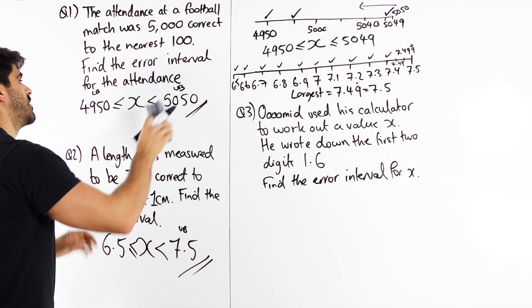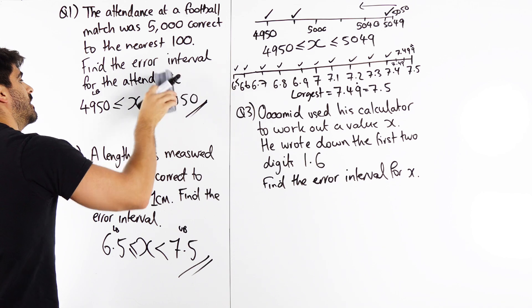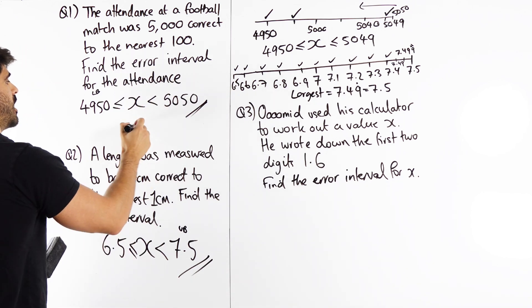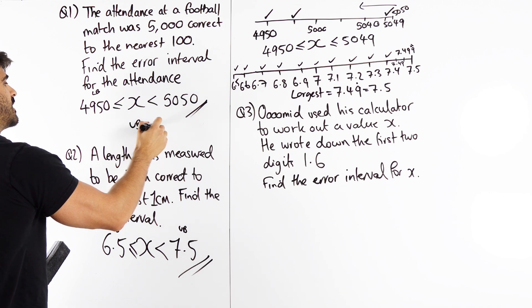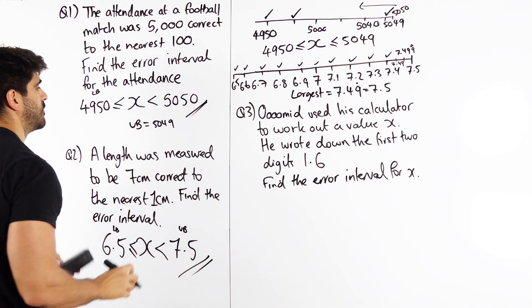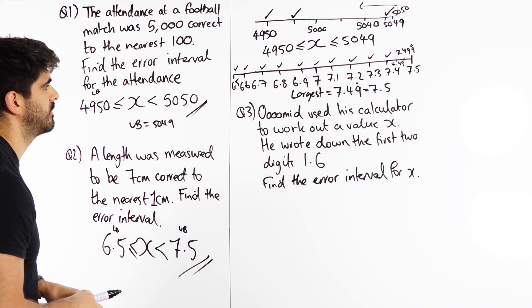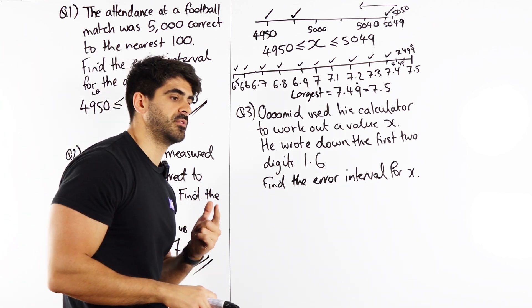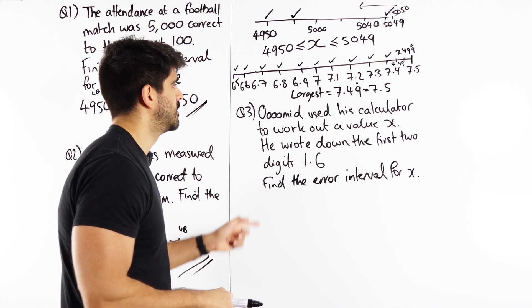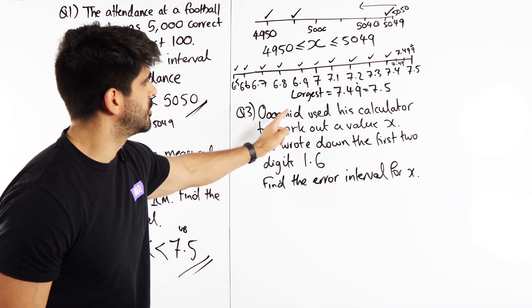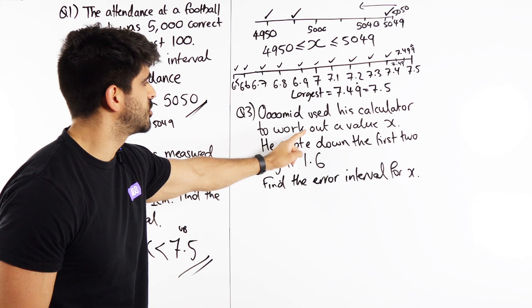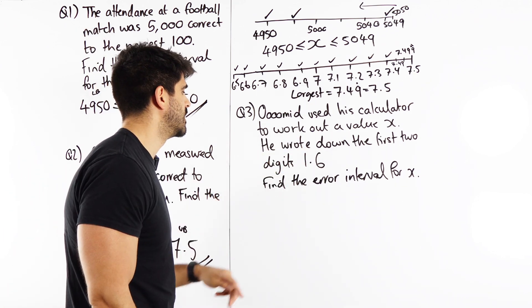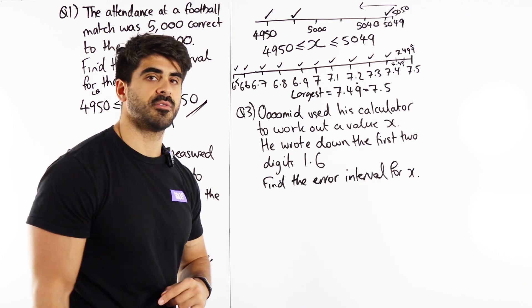This one is an interesting one that would catch you out because we're dealing with integers. But your error interval, you'd say this, but your upper bound is 5049. That's the largest value of the attendance at the football stadium. Now let's take a look at this last example of error intervals. Umid used his calculator to work out the value of x. He wrote down the first two digits, 1.6. Find the error interval for x.